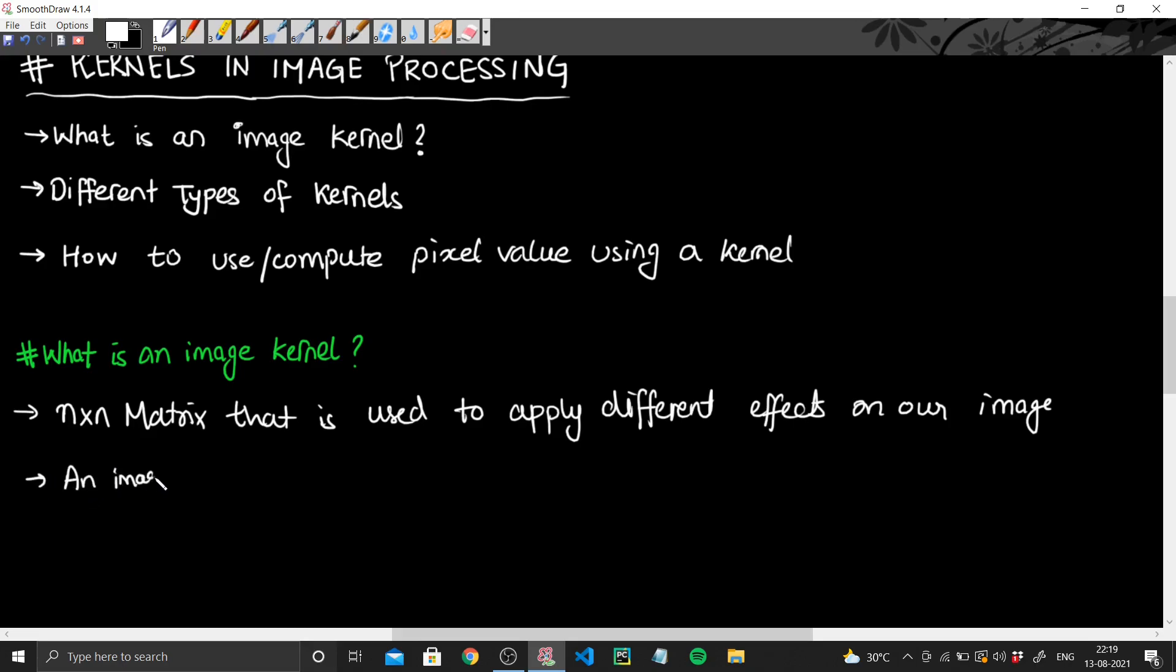And as we know that an image is nothing but a matrix or it's an m cross n matrix full of values. These values describe the intensity of the color present at that particular pixel. Each value corresponds to one pixel.